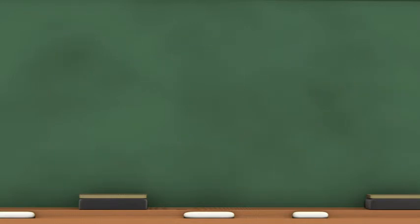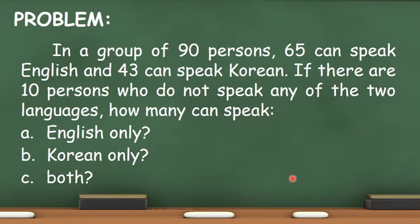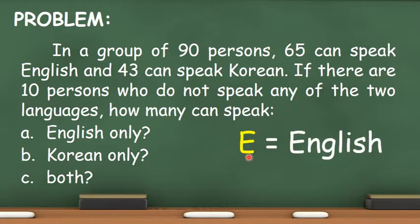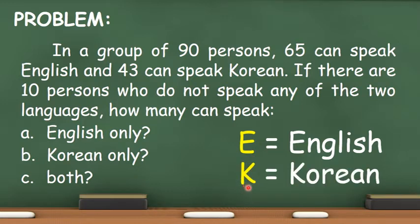Now let us try to solve a problem that involves two sets. In a group of 90 persons, 65 can speak English and 43 can speak Korean. If there are 10 persons who do not speak any of the two languages, how many can speak English only? How many can speak Korean only? And how many can speak both English and Korean? Since the problem involves two sets, let us represent the sets using two letters: E for the set of persons who can speak English and K for the set of persons who can speak Korean.